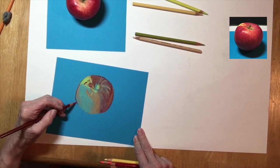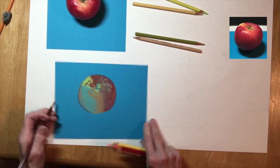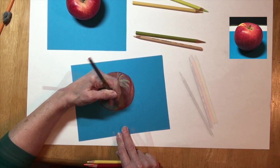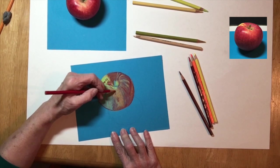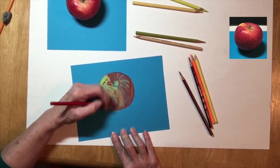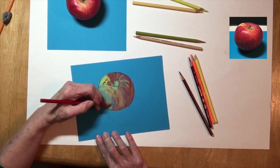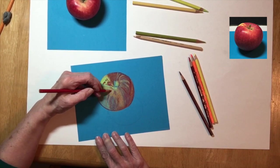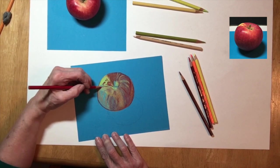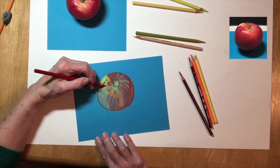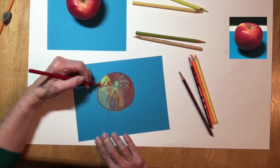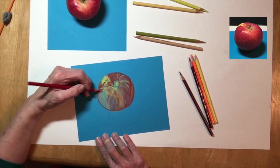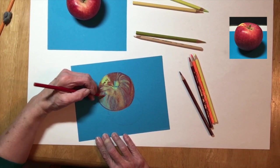When you start working with colored pencils and applying this much color, you're going to notice something called the bloom. Bloom is when the wax that's inside the colored pencil starts to come to the surface and creates this milky look on the surface of your drawing paper. You're going to see me take just a tissue, and with little circular motions I'm going to wipe that off the surface of my drawing.